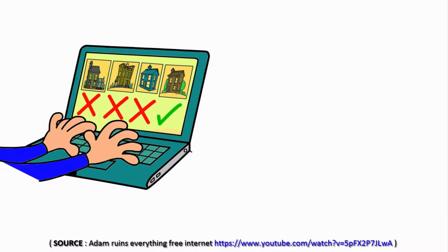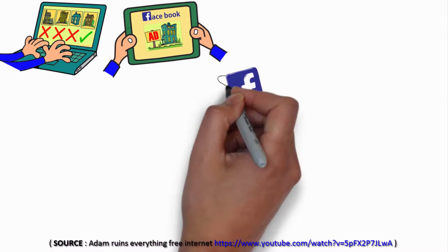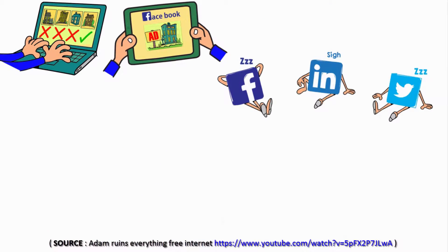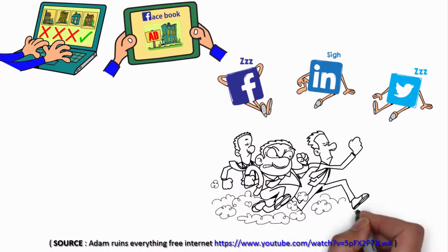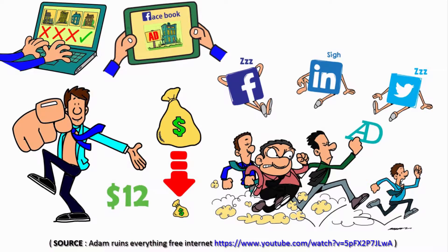Have you ever searched the net for something and then found an ad for that exact item on your favorite social network? Ever been interacting with friends on a social platform then found uncanny ads following you around the net? Does your social network value your privacy at $12 or less?